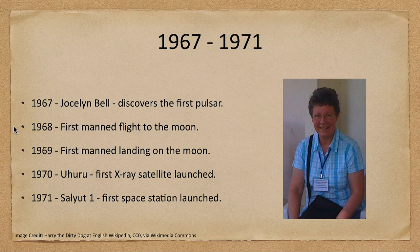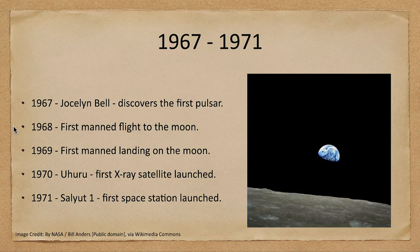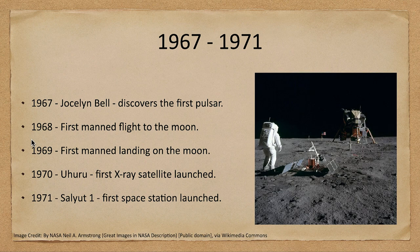The first manned flight to the moon came in 1968, giving us an image looking back toward Earth from around the moon — not on the surface yet, but seeing Earth going through phases just as the moon does as seen from Earth. A year later, Apollo 11 landed on the moon, showing the lunar lander, the American flag, and some of the equipment being set up on the surface.